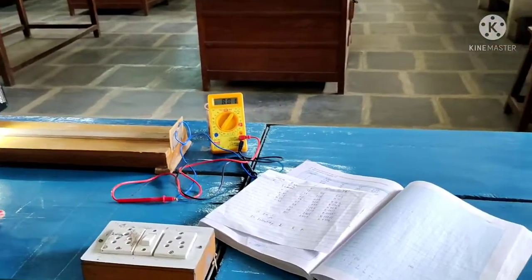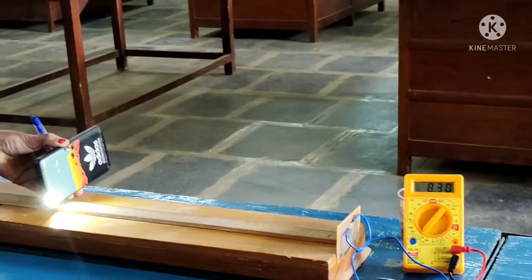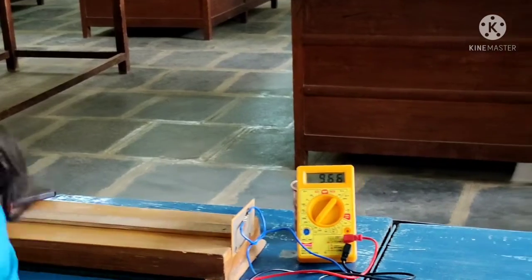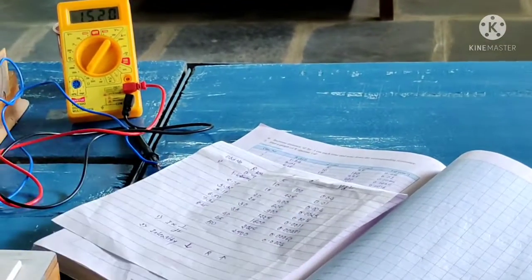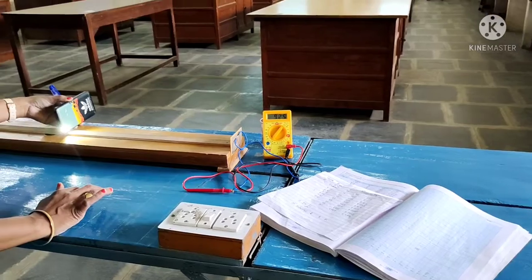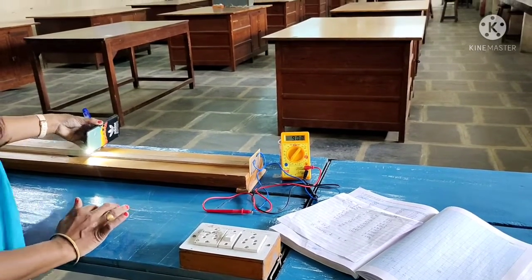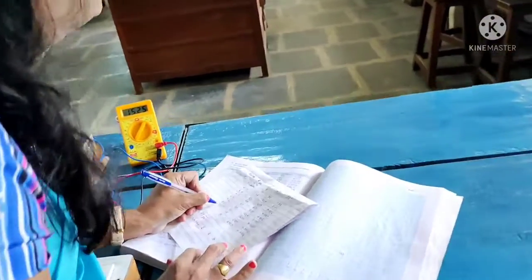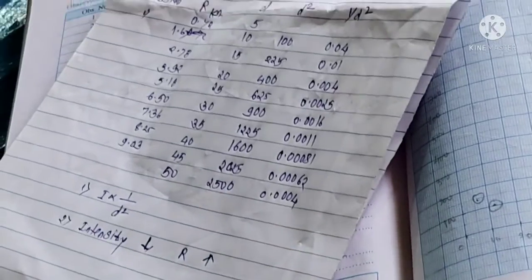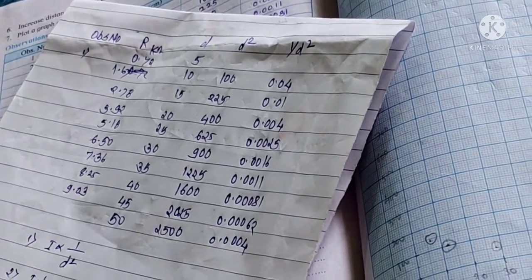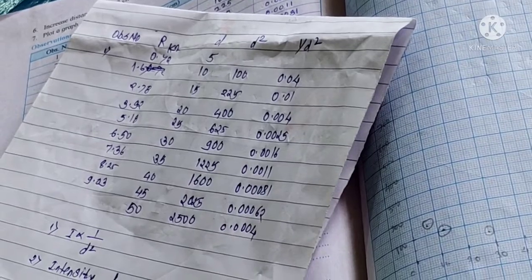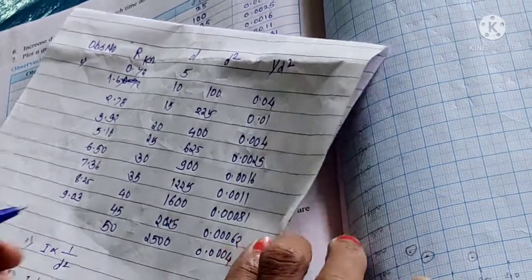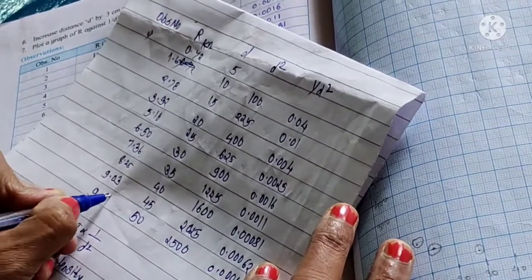Next one is 35, 7.36. Then for 40 centimeter distance it is coming 8.25. Then 45 centimeter it is coming 9.03, and last reading for 50 centimeter distance, 9.92.